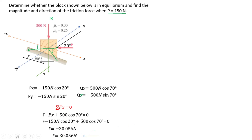The friction force acts at 20 degrees, which is the direct angle with the incline. We are now done finding the friction force. To summarize, the friction force is 30.056 newtons acting opposite to the initially assumed direction.